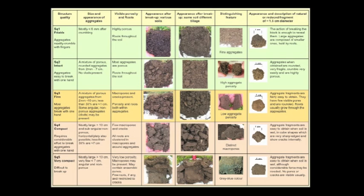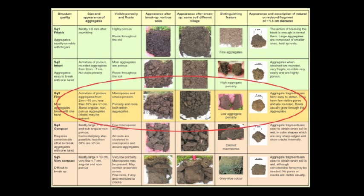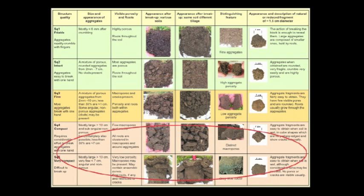The score sheet additionally indicates potential soil management requirements. SQ scores of 1 and 2, highlighted in green, indicate no changes in management. SQ3, highlighted in orange, indicates that potentially some long-term improvements are required. SQ4 and 5, highlighted in red, indicate the need for more immediate improvements.